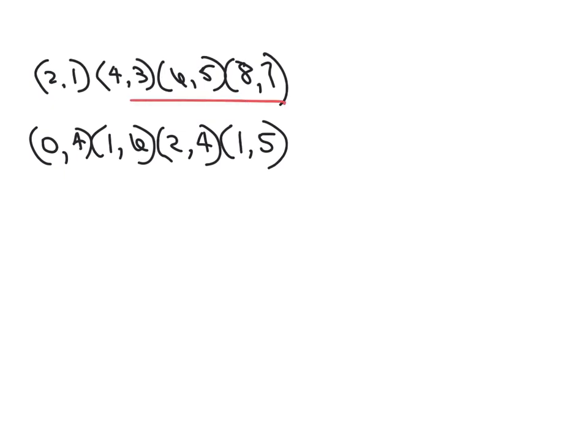So each one of these sets of ordered pairs are called a relation. And we need to find out if this relation is a function on the top and if it's a function on the bottom. The bottom one is a function. And the easy way to tell is, is there an x value that repeats itself? No. So therefore it is a function.